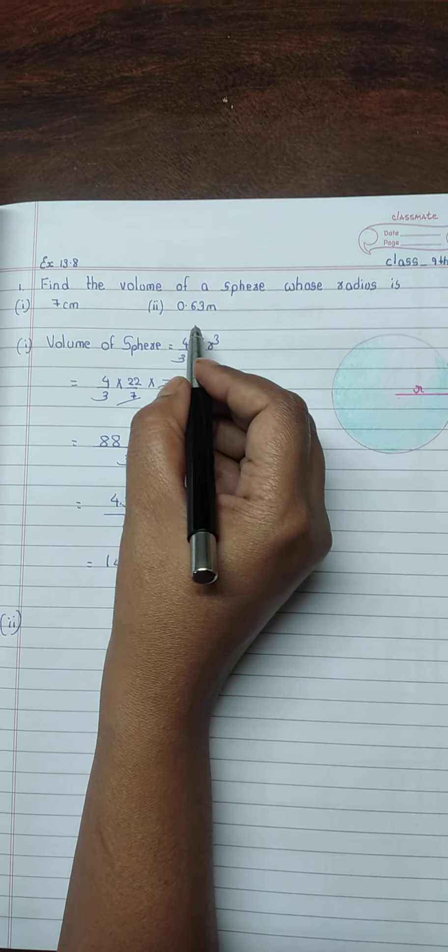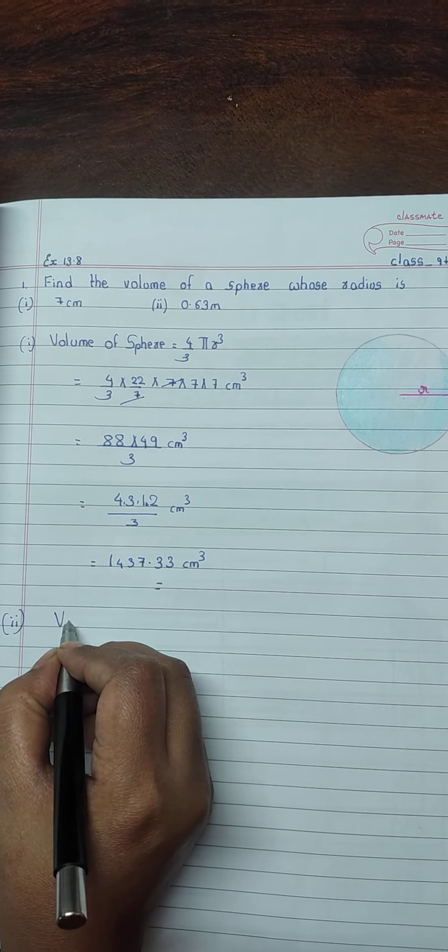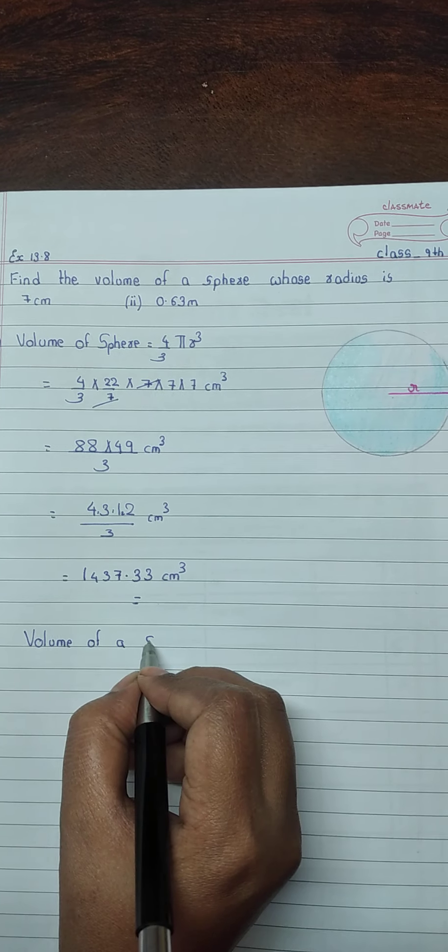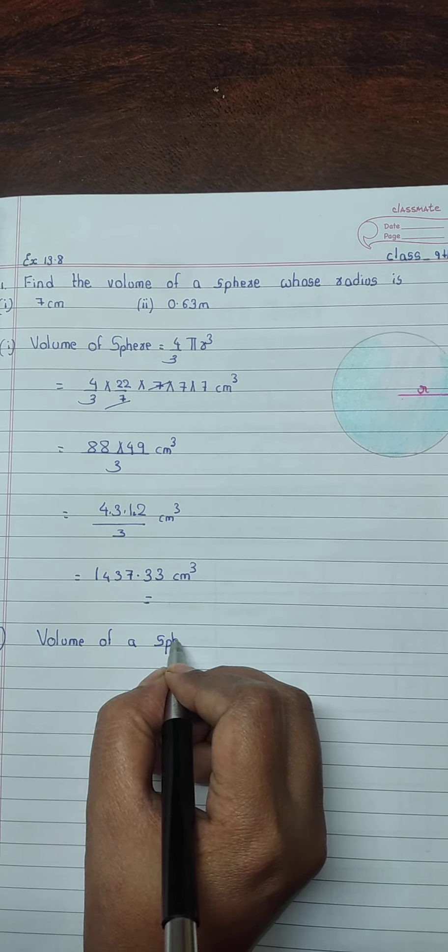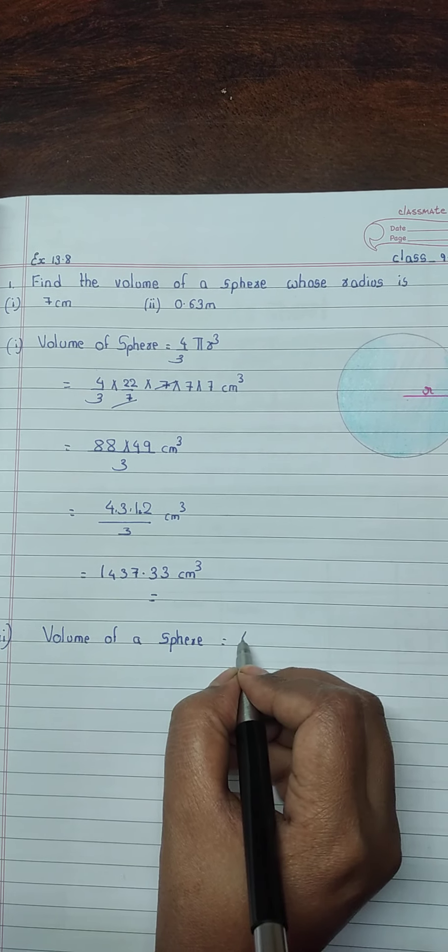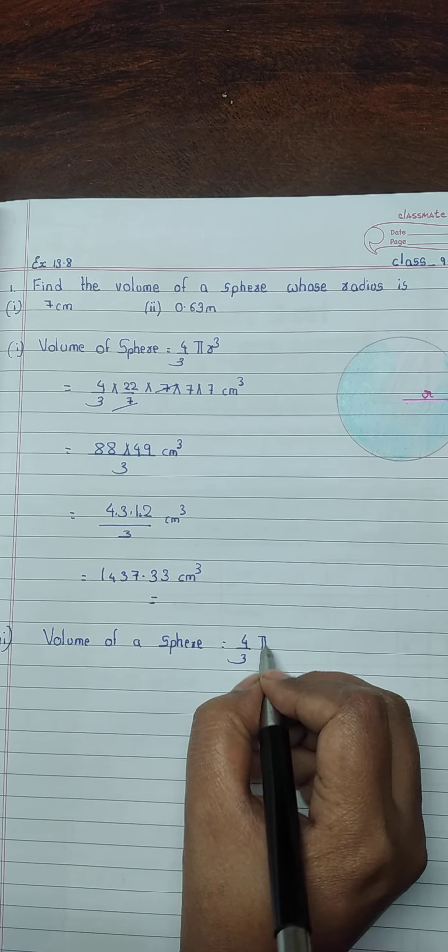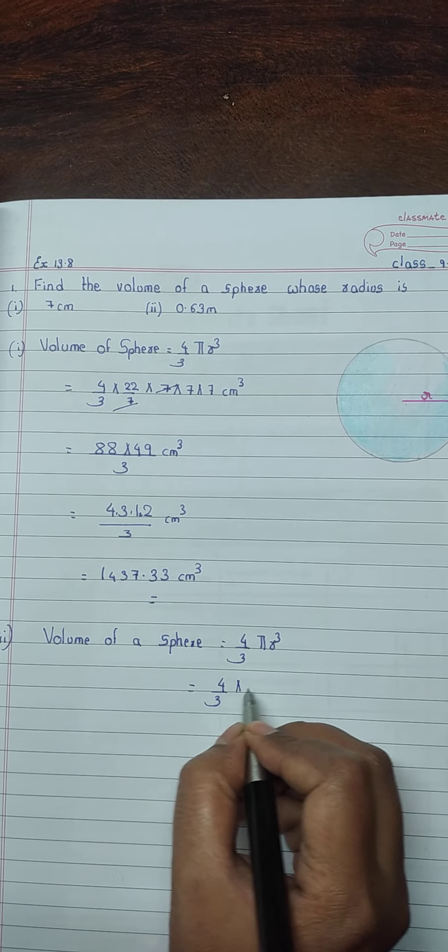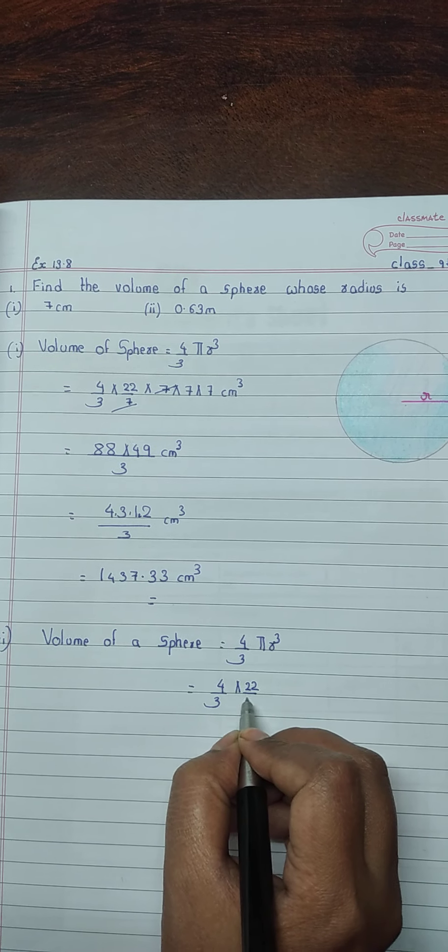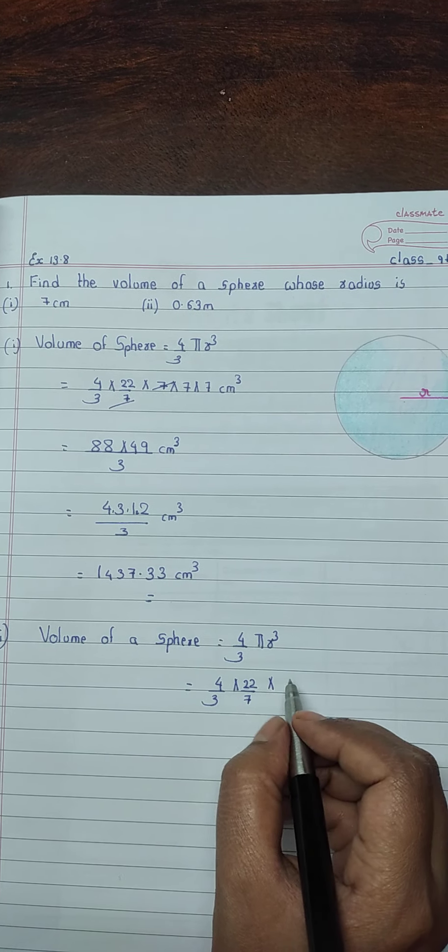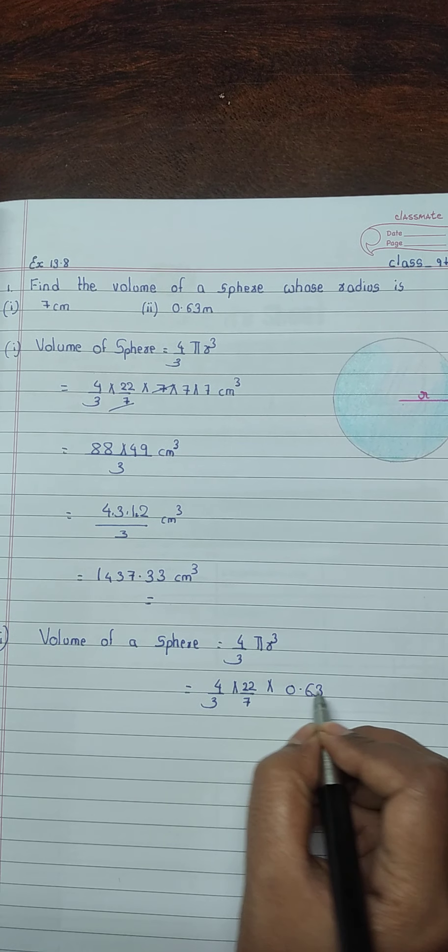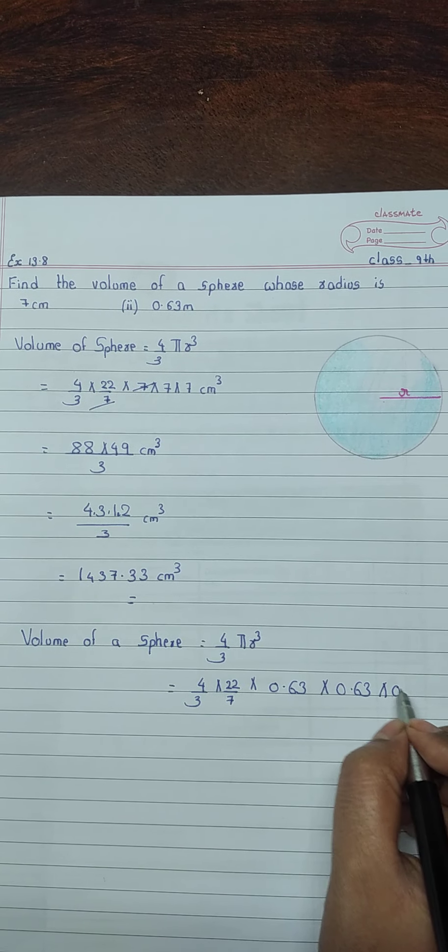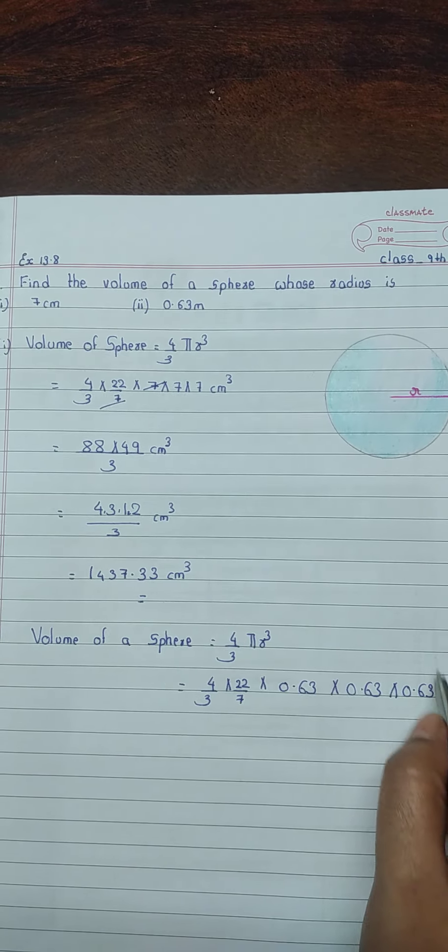Now second is 0.63 m. Volume of a sphere 4 by 3 pi r cubed. 4 by 3, pi value is 22 upon 7. Then r is 0.63 times 0.63 times 0.63. It is given in meter, therefore meter cube.